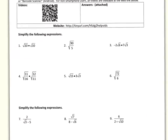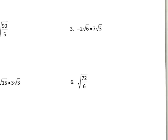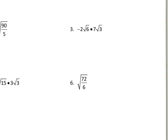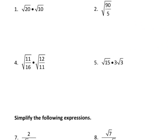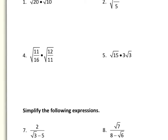Looking at the worksheet, number three is an example of multiplying radicals. Negative two times seven is negative fourteen, and root six times root three is root eighteen. Since root eighteen needs to be reduced, you factor out the perfect square: root nine times root two. Root nine is three, giving three root two. Then negative fourteen times three is negative forty-two root two, which is the fully simplified answer.